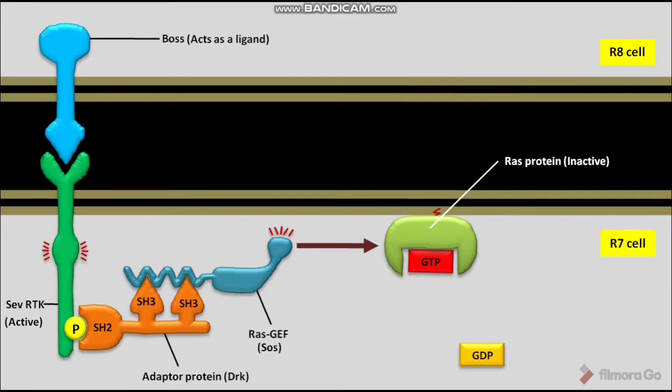Due to this GTP binding, the inactive Ras protein undergoes a conformational change. The active Ras protein then causes downstream signals. These downstream signals induce the R7 precursor cell to differentiate into a UV-sensing photoreceptor cell.